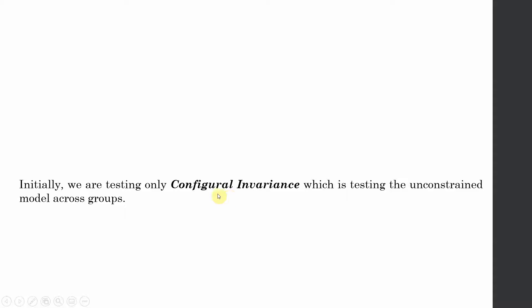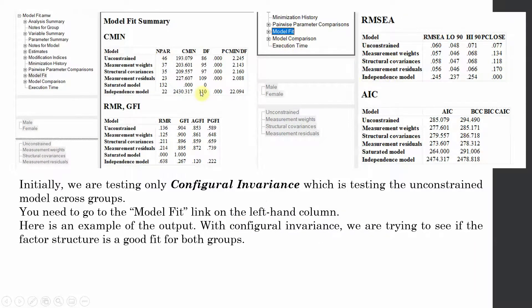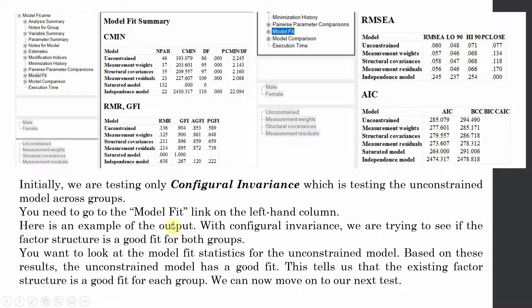This was the test for configural invariance. You go to model fit and get the model fit indices. In the example output, with configural invariance we are trying to see if the factor structure is a good fit for both groups. As we can see, yes — the factor structure was a good fit for both groups, as we had good model fit indices for the unconstrained model. This tells us that the existing factor structure is a good fit for each group, and now we can move to the next step.